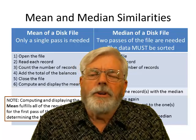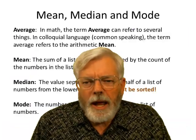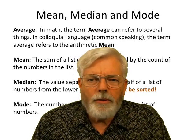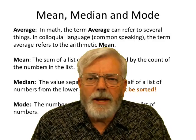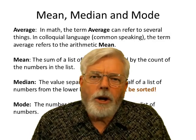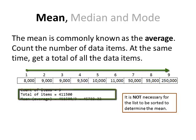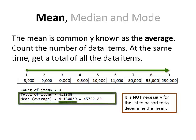Let's start off with a couple of definitions. The mean is commonly known as the average. I need to count the number of data items and get a total of all the data items, then take the total and divide it by the count — that gives us the mean. In this example, I have 8,000, 9,000, 9,000, 9,500, etc. There's a total of 9 data items, and the total is 411,500. The mean is 411,500 divided by 9, which equals 45,722.22.